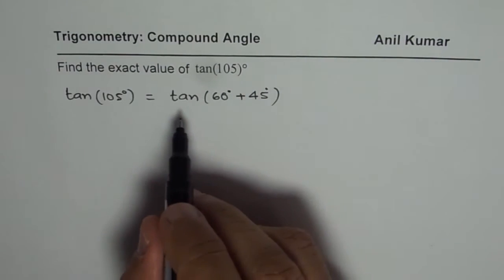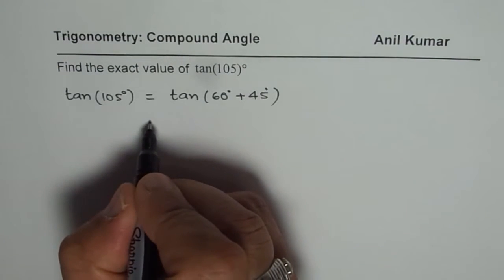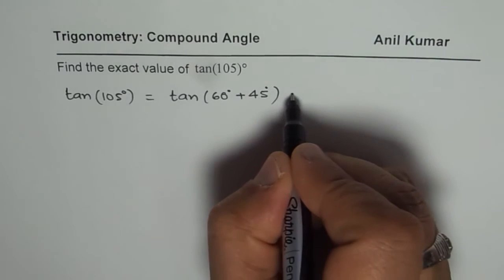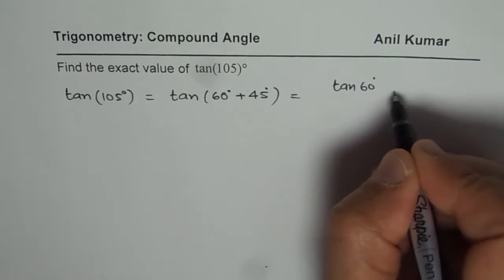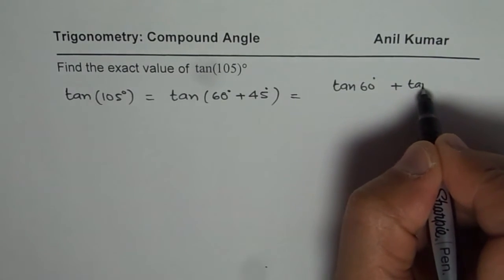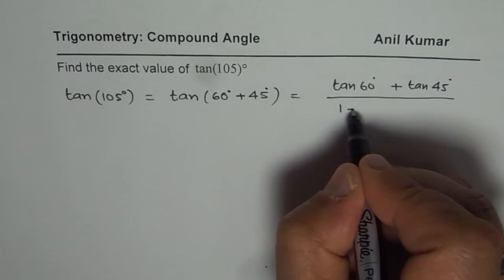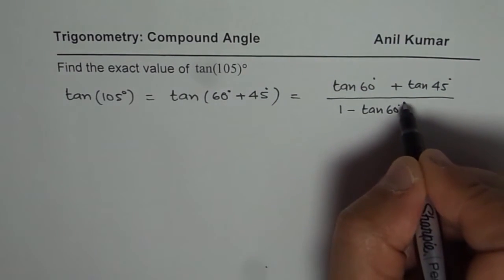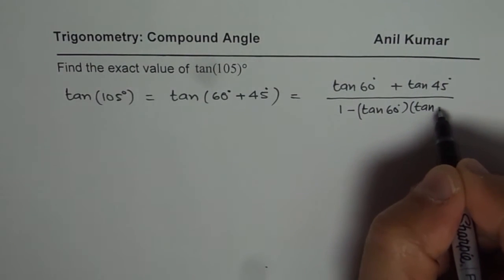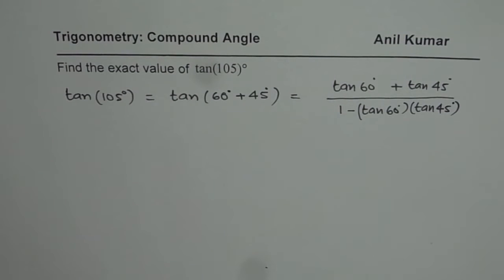Now we can apply the compound angle formula and expand this. So when you expand this, what do you get? You get tan of 60 degrees plus tan of 45 degrees divided by 1 minus tan 60 degrees times tan 45 degrees. That is how you can expand it using the compound angle formula.